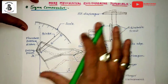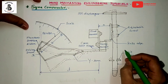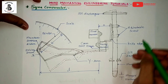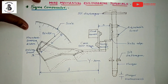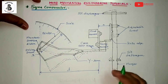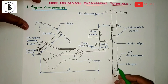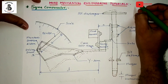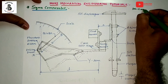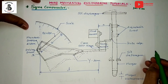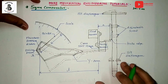Starting with the construction of the Sigma comparator. Sigma comparator works on the leverage principle, in which high magnification is obtained entirely by mechanical means. The magnification range for Sigma comparators is around 300 to 5000, which provides good sensitivity as well as good accuracy during measurements.